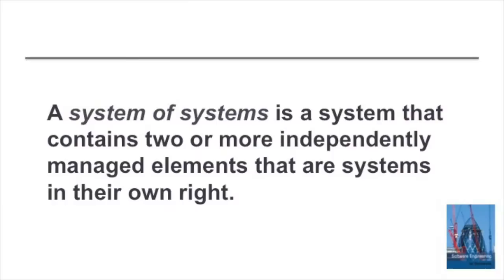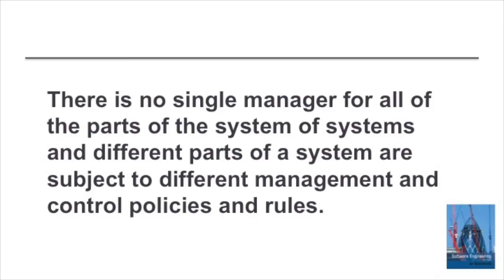So first of all, what do we mean by a system of systems? A system of systems is an overall system that we have put together by integrating existing independent systems. The keyword here is independence — these systems are independently managed, owned by different people perhaps, and subject to different management policies. Therefore we don't have an overall direction to the system.